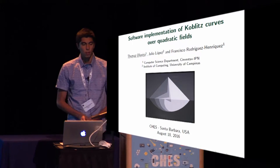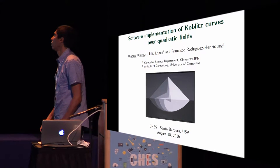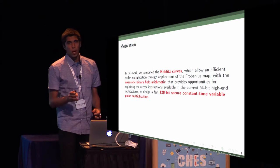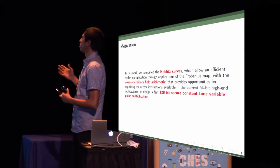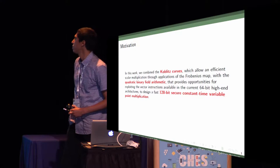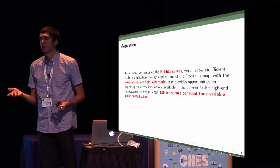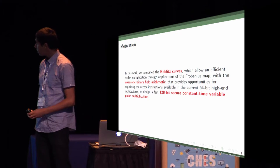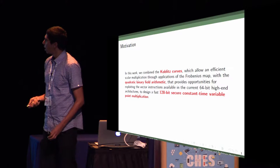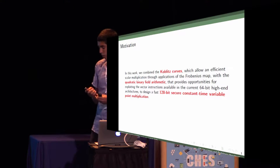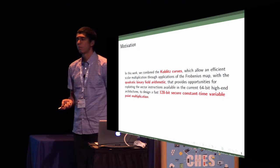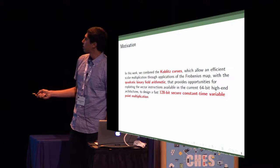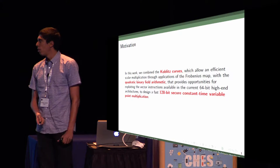Hello everyone. This is our work on software implementation of Koblitz curves over quadratic fields. The main motivation for this work is to combine the Koblitz curves, which allow efficient scalar multiplication through applications of the Frobenius map, with quadratic field arithmetic. This quadratic arithmetic provides opportunities to exploit instruction level parallelism available in current desktop architectures. The purpose is to design a fast 128-bit secure constant time variable point multiplication.